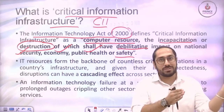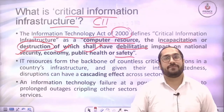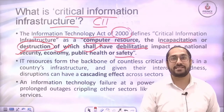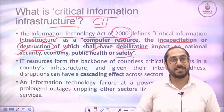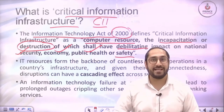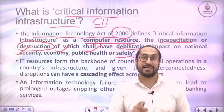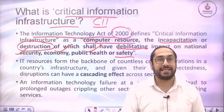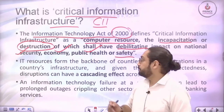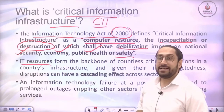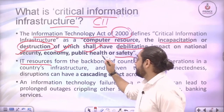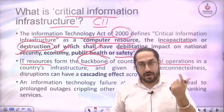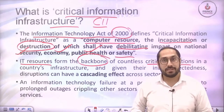In short, if one critical computer resource stops functioning properly, it will take other things with it — affecting the economy, public health, safety, and security of the nation. The term 'information' is used because these are related to computer and IT infrastructure. IT resources are important because they are the backbone of various critical operations and critical infrastructures.